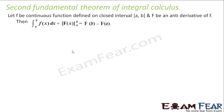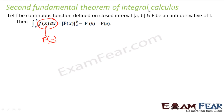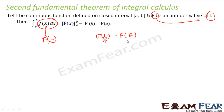Now let us see the second fundamental theorem of integral calculus. It says that ∫f(x)dx from a to b is nothing but F(b) minus F(a), where capital F is the antiderivative of small f. You find the antiderivative of f(x), call it F(x), and then compute F(b) minus F(a). We will take some examples to make this clear — just understand that ∫f(x)dx from a to b equals antiderivative at b minus antiderivative at a.